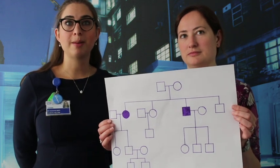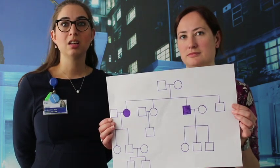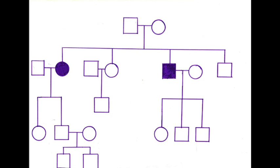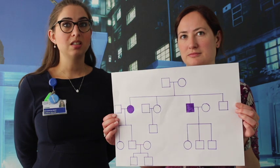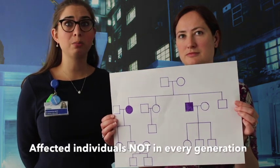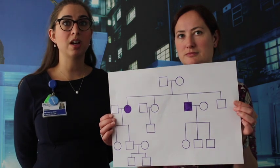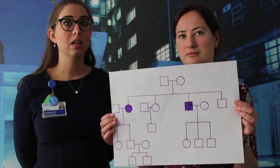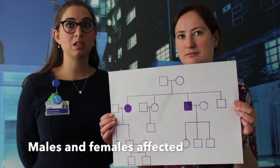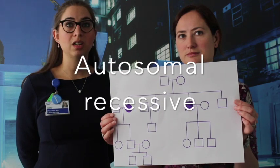Here's a pedigree of a family with a condition with a different mode of inheritance. What are the differences that you can see when we compare to the last pedigree? Here you can see that the affected family members are in the same generation — in fact they're brother and sister. There are fewer family members affected overall, but both males and females are still affected. This is autosomal recessive inheritance.